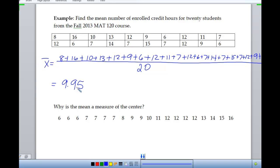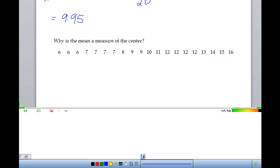So that's a measure of the center. When you look at these data values, which I've sorted here for us, do you think 9.95 is a pretty good measure of the center of our data? Yes, it looks like a pretty good measure.